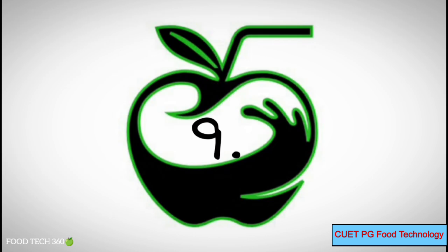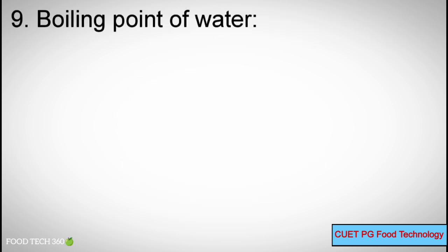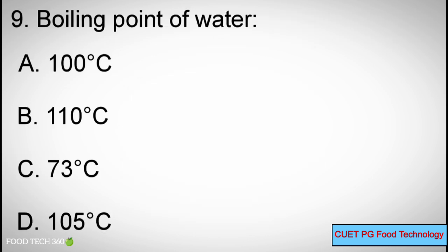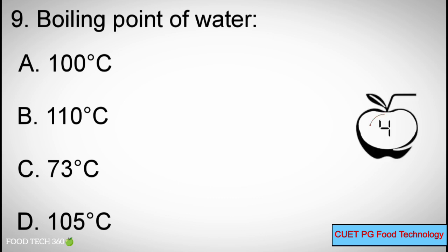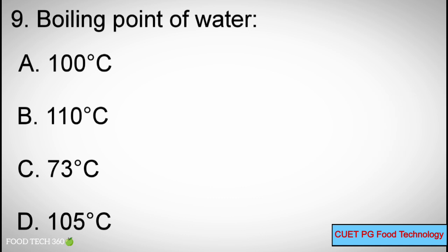Question number 9. Boiling point of water: Options: A. 100 Degrees Celsius, B. 110 Degrees Celsius, C. 73 Degrees Celsius, D. 105 Degrees Celsius. Correct answer: A. 100 Degrees Celsius.